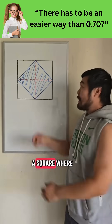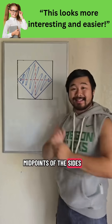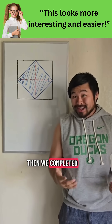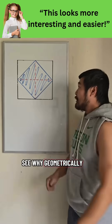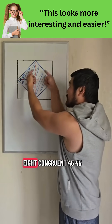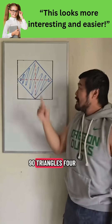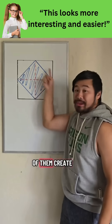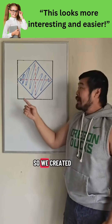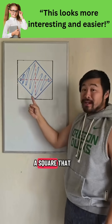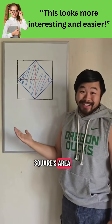If we create a square where we connect the midpoints of the sides, then we completed the challenge. And we can see why geometrically. We can see eight congruent 45-45-90 triangles. Four of them create the square over here. So we created a square that has exactly half of the larger square's area.